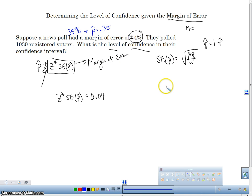And we know what q hat is going to be because q hat is going to be the one minus this, one minus 0.35, which is going to be 0.65. So what we're going to do is we're going to plug in here and we're going to try to figure out what z star is because z star is going to tell us what this level of confidence is.